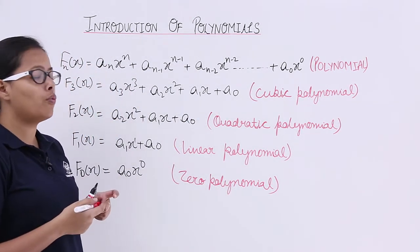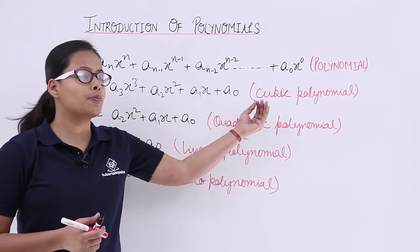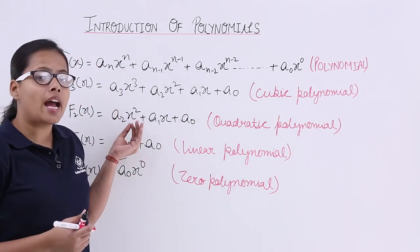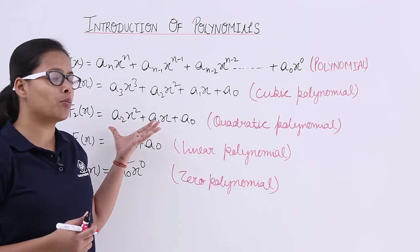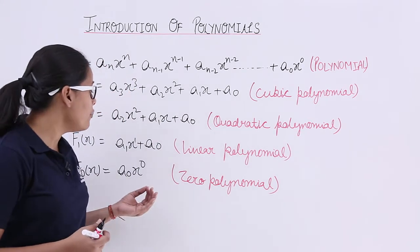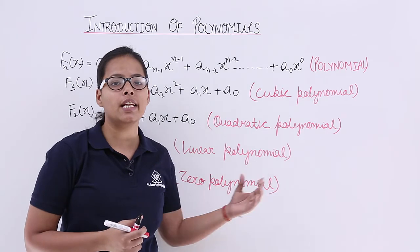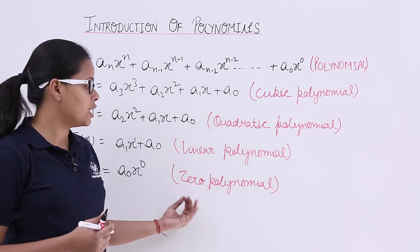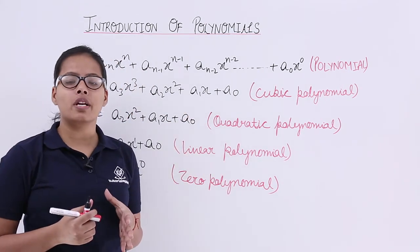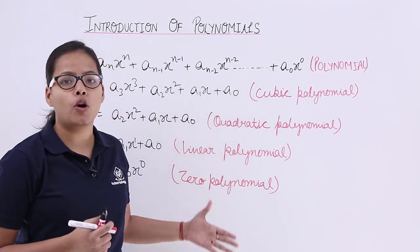So you should now be familiar with all these polynomials: if the highest degree in x is 3 it is a cubic polynomial, if it is 2 it is a quadratic polynomial, if it is 1 it is a linear polynomial, and if it is 0 it is a zero polynomial. I will be discussing these polynomials in detail in the next video lectures.